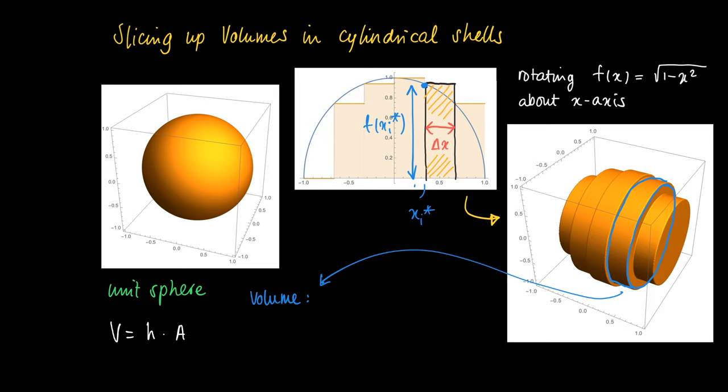The cylindrical shell is given by h times the surface area, a(x i star). But h is now given by delta x and we know that a(x i star) is no more than pi times the radius of each such shell. And this is given by pi times f(x i star) squared.